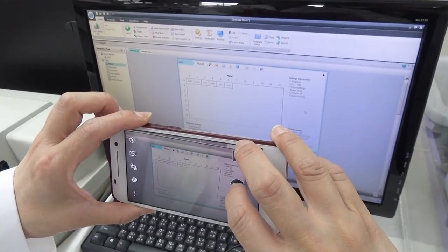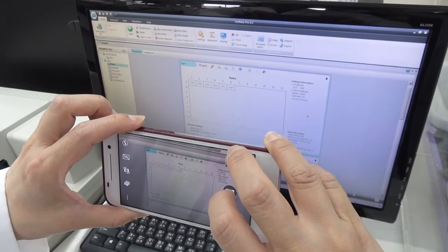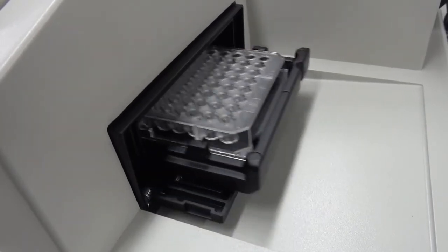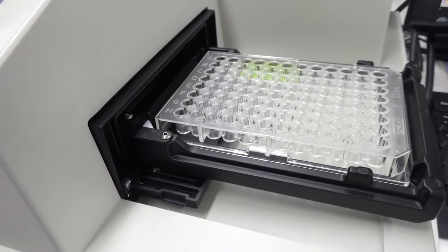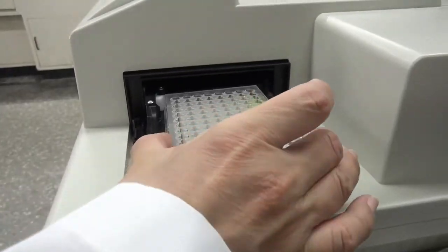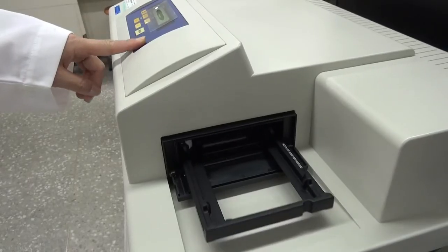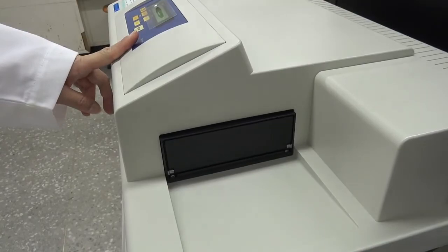Record the results by taking pictures with a cell phone or export the data from the computer for analysis. The machine pushes the microplate out after measurement. Be sure to take the microplate away and press the drawer key on the panel to draw the microplate holder back into the machine.